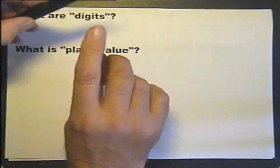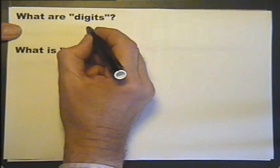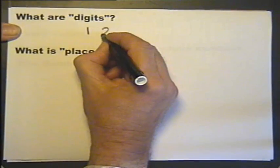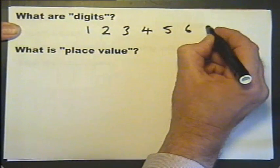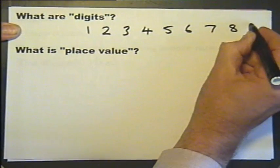What are digits? Well, these are digits: 1, 2, 3, 4, 5, 6, 7, 8, and 9.